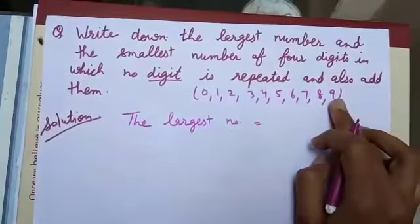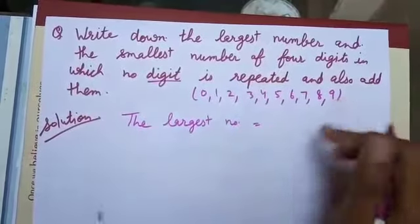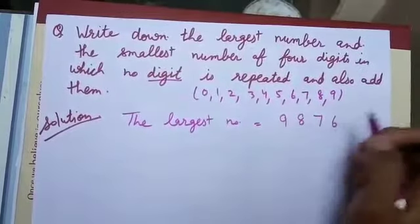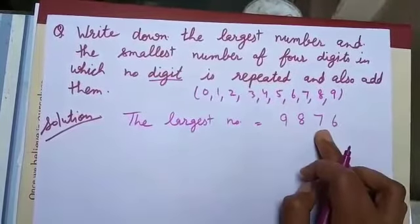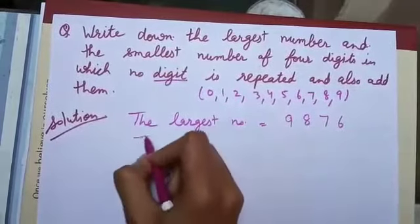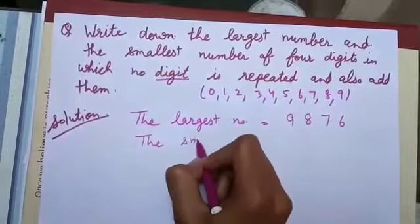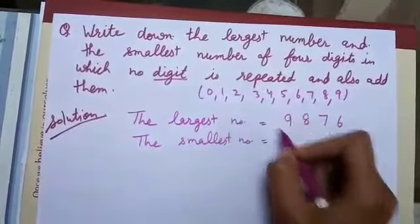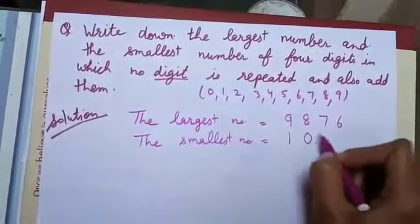Now the largest 4-digit number with no repeated digits. I will start from the largest digit: 9876. Now the smallest 4-digit number is 1023.